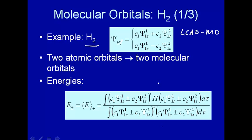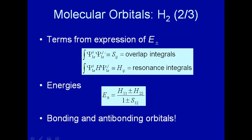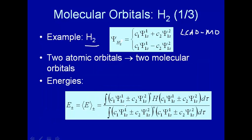H would be the Hamiltonian for two electrons and two protons — in other words, two H atoms. We know what the wave functions are; they're single-electron wave functions. We did this, for example, with the perturbation method for solving the helium atom. If you multiply these out, you get different kinds of integrals.